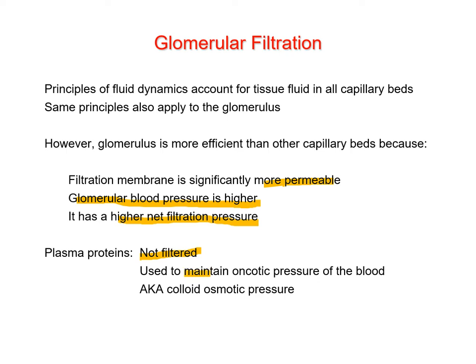Plasma proteins help maintain the osmotic potential of the blood — the ability to pull fluid back into the bloodstream from the capsule space. This osmotic potential is also called oncotic pressure or colloid osmotic pressure; these terms are interchangeable.